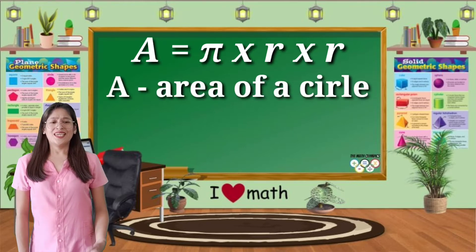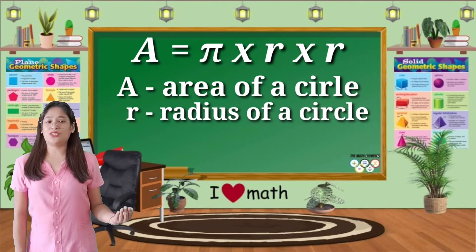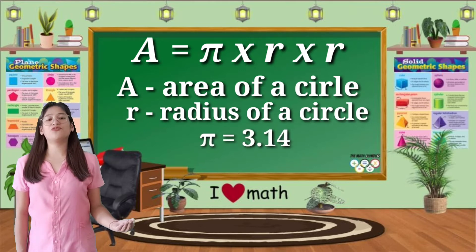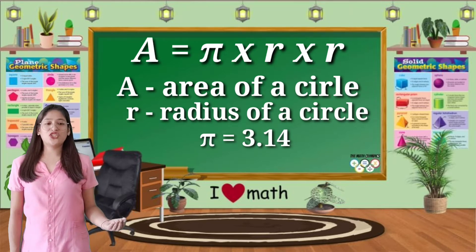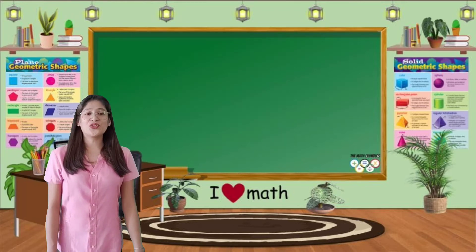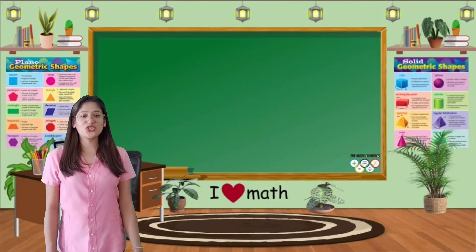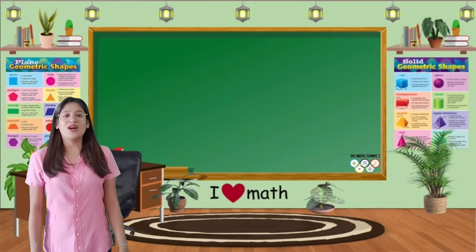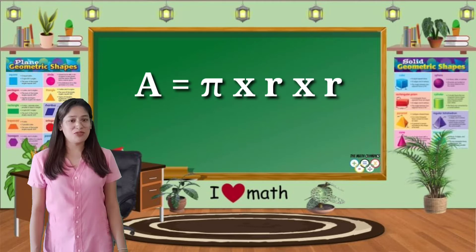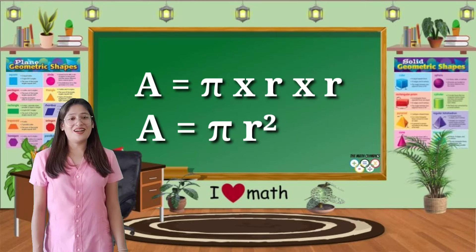Whereas A is the area of the circle, R represents the radius of the circle, and pi has an equivalent value of 3.14 — the ratio of a circle's circumference to its diameter. Through this lesson, you will be able to learn how to solve the area of a circle by using the formula A equals pi times R times R, or A equals pi R squared.